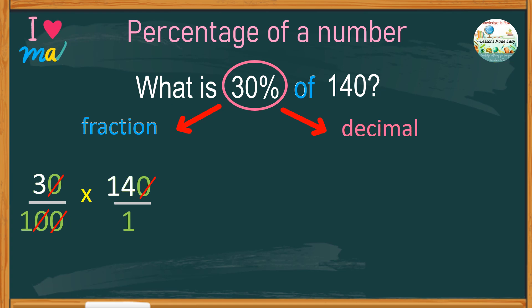Since we have two zeros in the numerator and two zeros in the denominator, we might as well cancel the zeros, leaving us with only 3 and 14. Thereby, when multiplied, we get a product of 42. So, for our answer, 30% of 140 is 42.